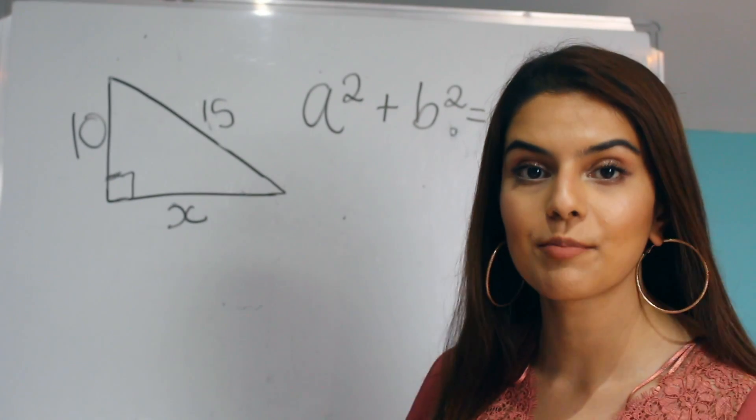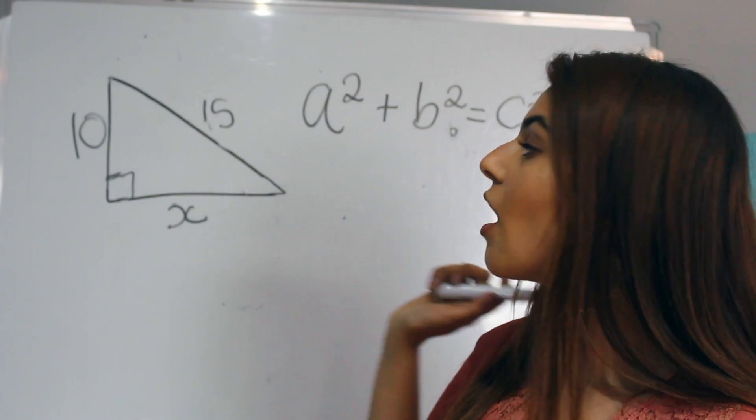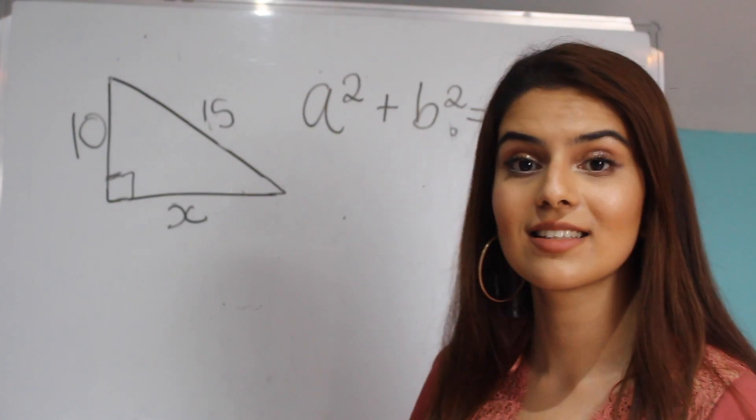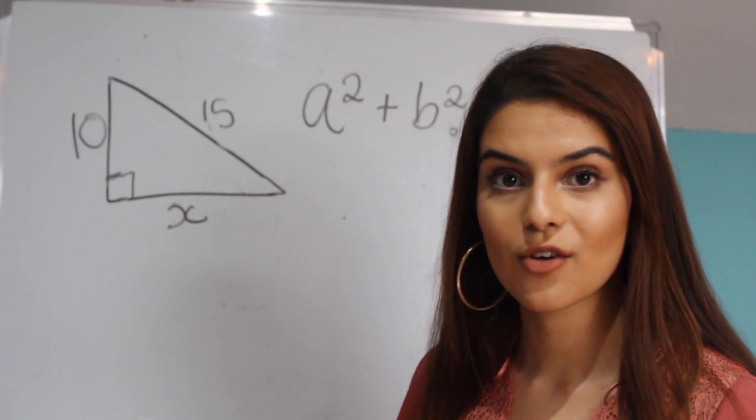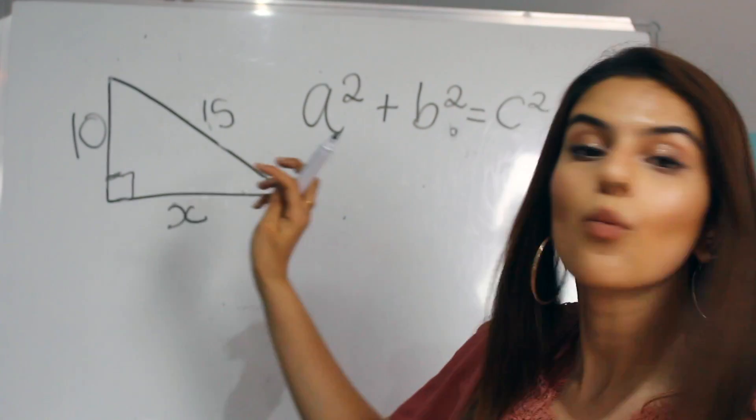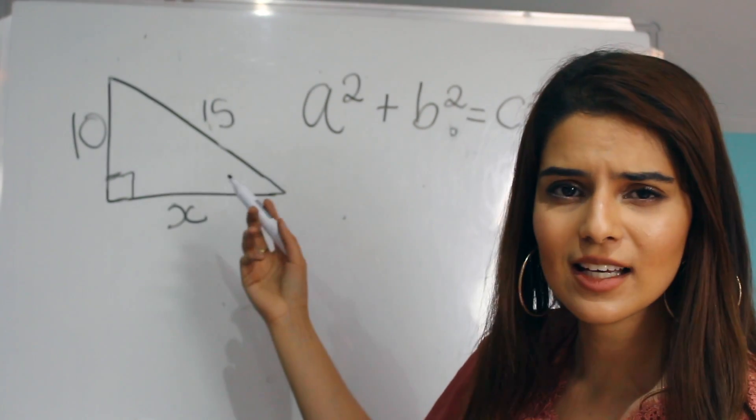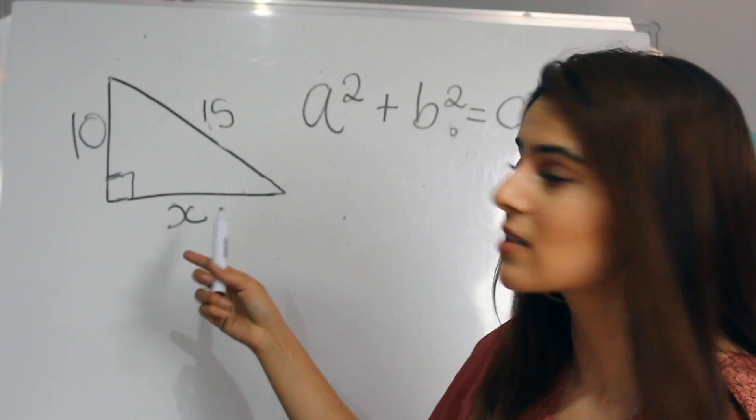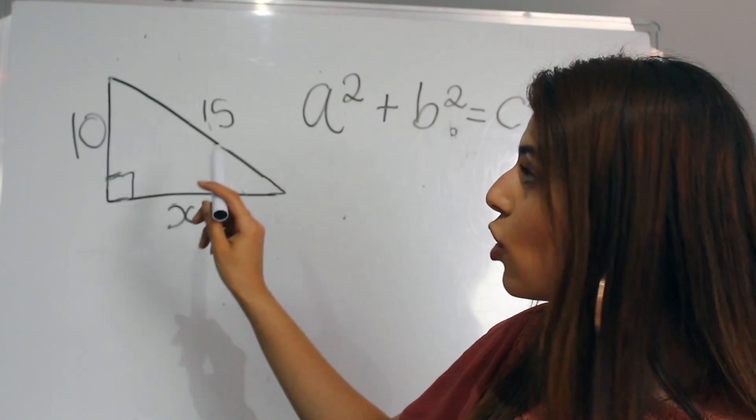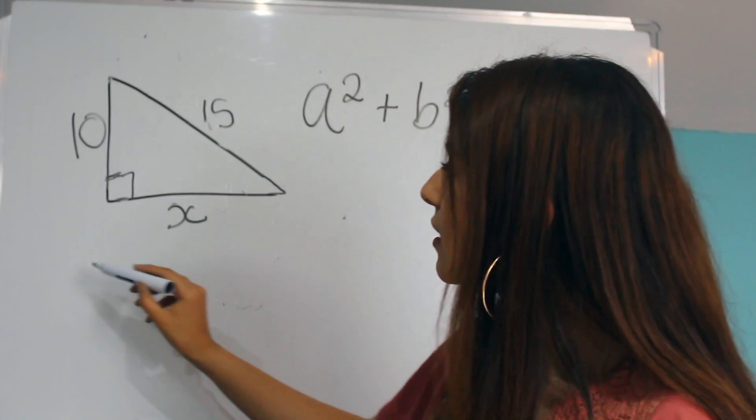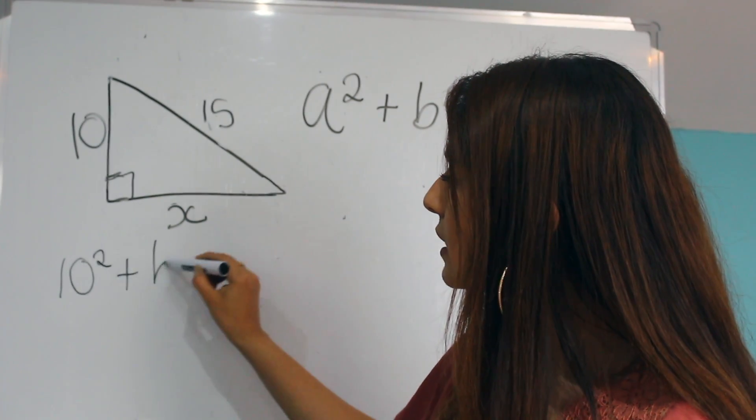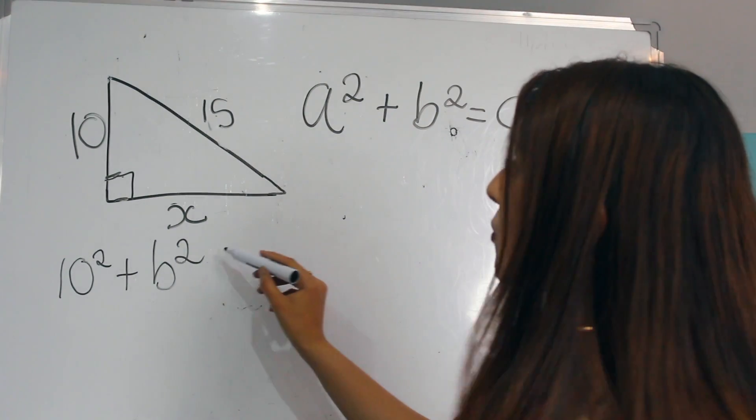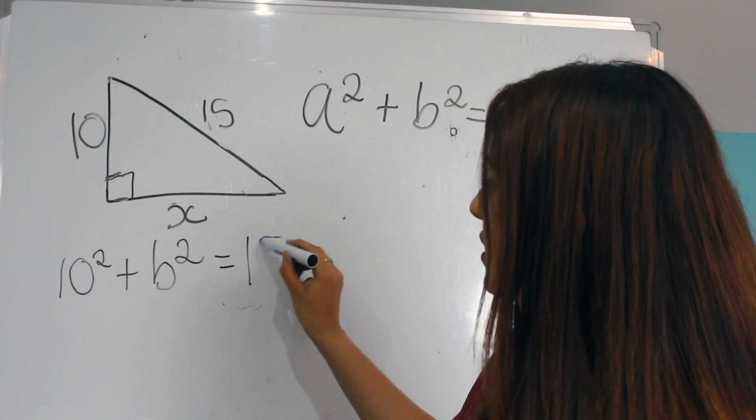So for the next example, we need to find the length of side X. And since this is again a right angle triangle, we would use the Pythagoras' Theorem. Well, we already know length C since C is always the longest. So we would put A as 10 squared plus B squared, which we don't know, equals 15 squared.